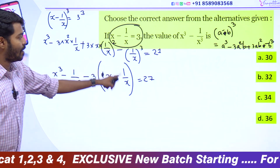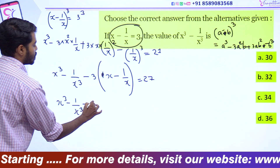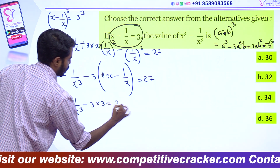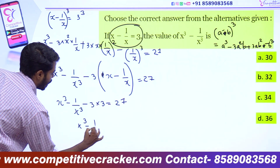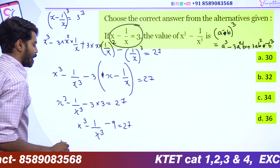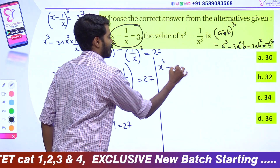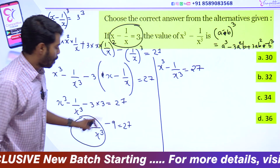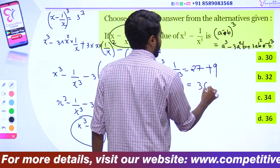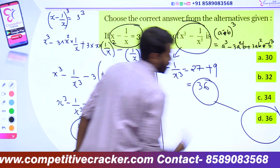Minus 3 into x minus 1 by x equals 27. Then we can write x³ minus 1 by x³ minus 3 into — instead of x minus 1 by x, we write the value 3 — into 3 equals 27. That is x³ minus 1 by x³ minus 9 equals 27. So x³ minus 1 by x³ equals 36.